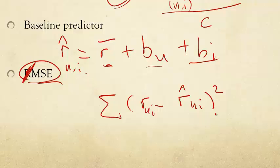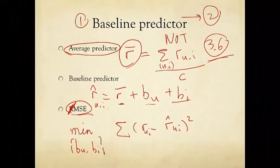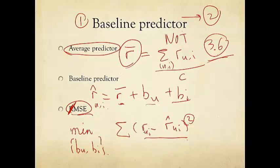So, this is our objective function for the minimization, minimize over the set of B-U's and B-I's, the summation of the square of the differences between the ground truth, R-U-I, which you have in the training phase,